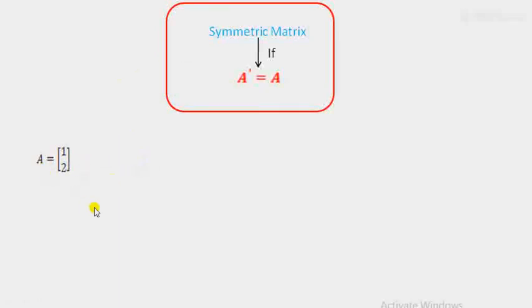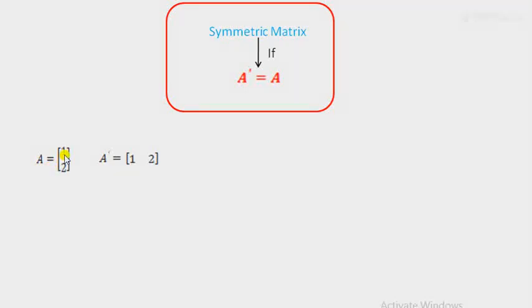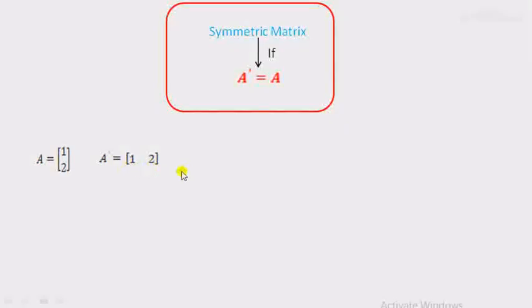Let matrix A here. To check if it is symmetric or not, we verify the condition A-dash equals A, then find the value of A-dash. A-dash means the transpose of matrix A — interchanging rows and columns. The row is written in the form of a column. The order of matrix A is two cross one, and the order of A-dash is one cross two. Both orders are not equal, therefore it is not a symmetric matrix.